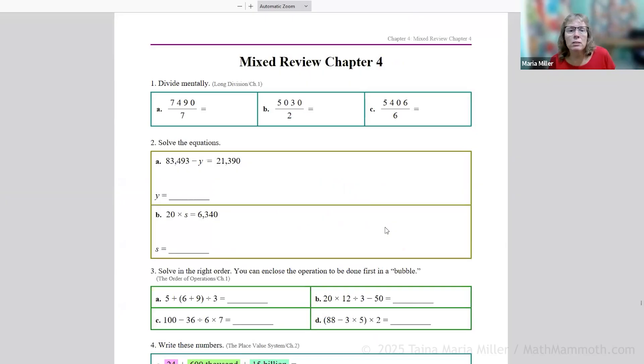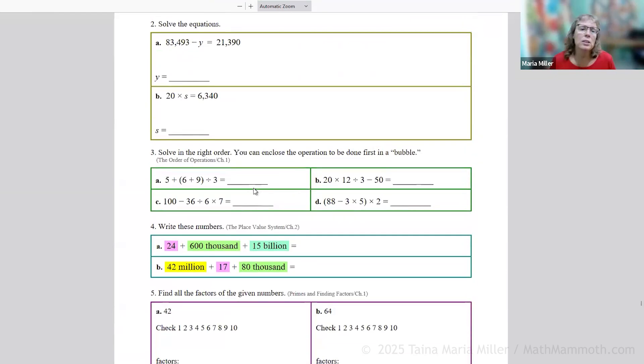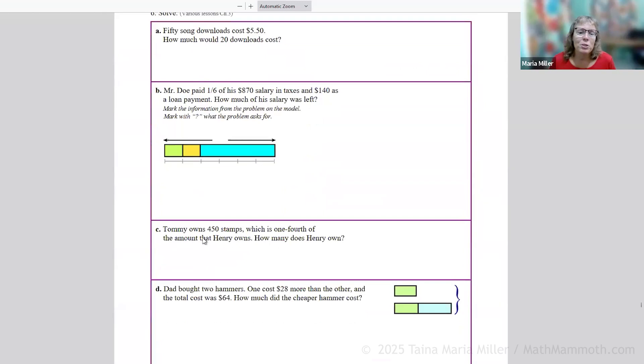Here's a mixed review lesson. We have divide, solve the equations, order of operations, write these large numbers, find all the factors of the given numbers. So this is spiral review. These are reviewing the problem solving lessons from the earlier chapter.